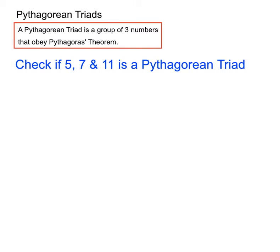Okay, so, another example. Let's check if 5, 7, and 11 is a Pythagorean triad this time. Let's see if those three numbers work well with the Pythagoras' theorem. So, we're asking, does 5 squared plus 7 squared equal 11 squared? Does that make mathematical sense? Let's have a look.